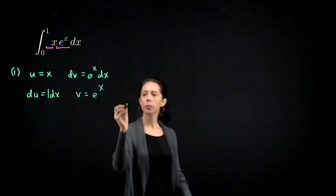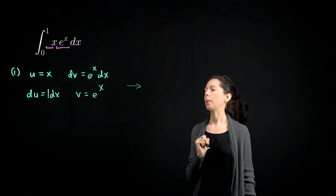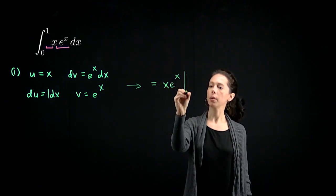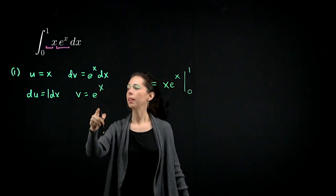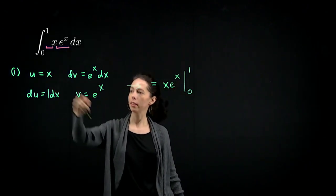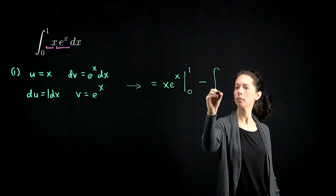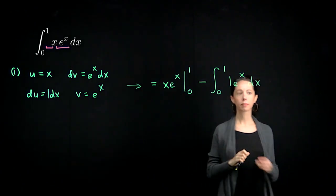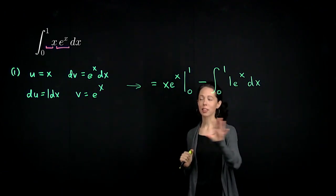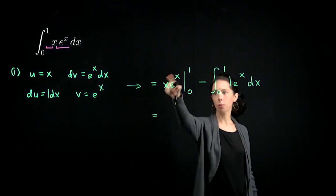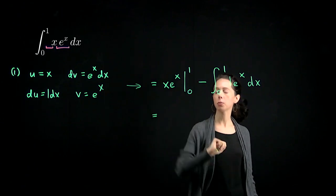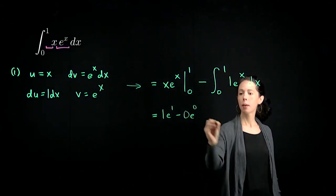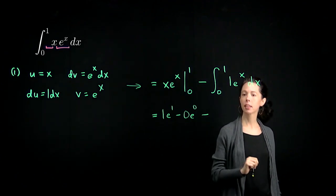This looks pretty good. This leads to the right-hand side of the integration by parts formula: u times v is x times e to the x evaluated from 0 to 1, minus the integral from 0 to 1 of 1 times e to the x dx. For the product u times v, we plug in the top bound minus the bottom bound: that's 1 times e to the 1 minus 0 times e to the 0, minus the anti-derivative of e to the x evaluated from 0 to 1, which gives us minus e to the x from 0 to 1.